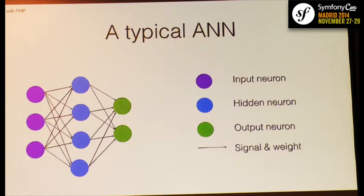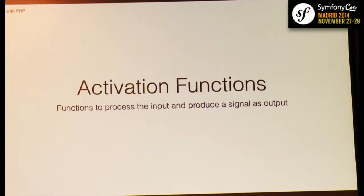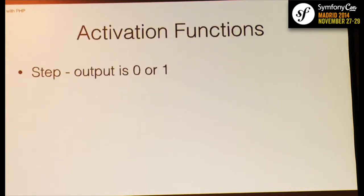Now let's talk about activation functions, another important concept. How do neurons generate signals for the following layer? Through activation functions — functions inside each neuron that capture all inputs, multiply them by the weights, and produce an output signal for the next layer. There are many activation functions; you can even write your own. They are really important because they define how the neural network behaves and evolves. We'll look at three common ones.